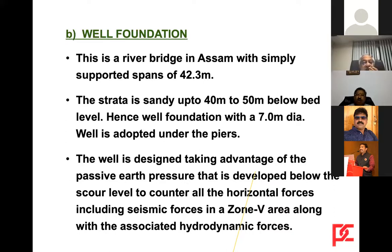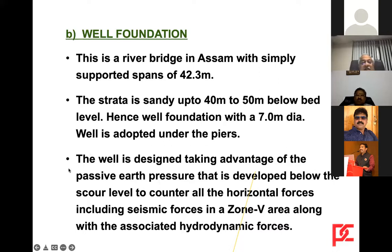Now well foundation: this is a bridge done in Assam, a river bridge with simply supported spans of 42.3 meters. The strata is sandy up to 40 to 50 meters below bed level. Hence, a well foundation with seven-meter diameter is adopted under the piers. The well is designed taking advantage of passive earth pressure developed below the scour level to counter all horizontal forces, including seismic forces in a Zone 5 area along with associated hydrodynamic forces.